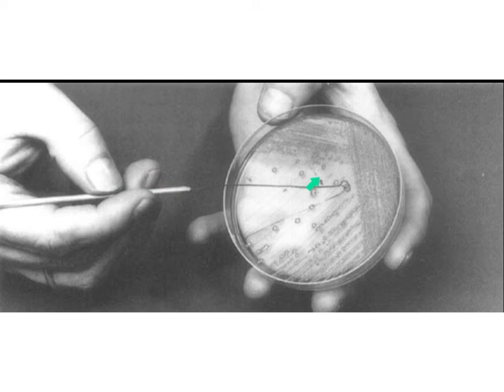Or you can take this flame loop and touch an area of the agar where there's no growth and make sure that there's no sizzling. The first thing we do is find one colony and scoop up one individual colony.